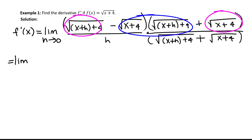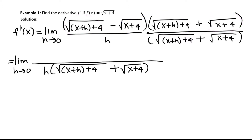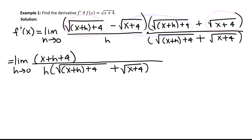This becomes the limit as h approaches 0. Let's do the denominator first — it will be h times the square root of x plus h plus 4, plus the square root of x plus 4. To multiply the two terms in the numerator, you might want to think of FOIL. The square root of x plus h plus 4 times itself gives x plus h plus 4. The outside and inside term products cancel. The product of the last terms — square root of x plus 4 times itself — is x plus 4.